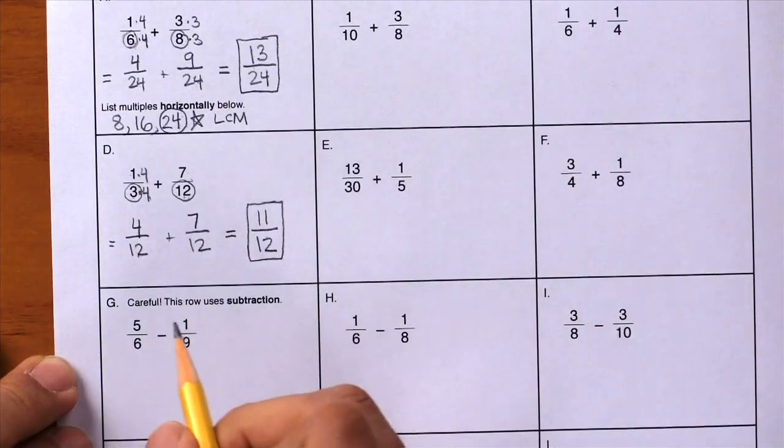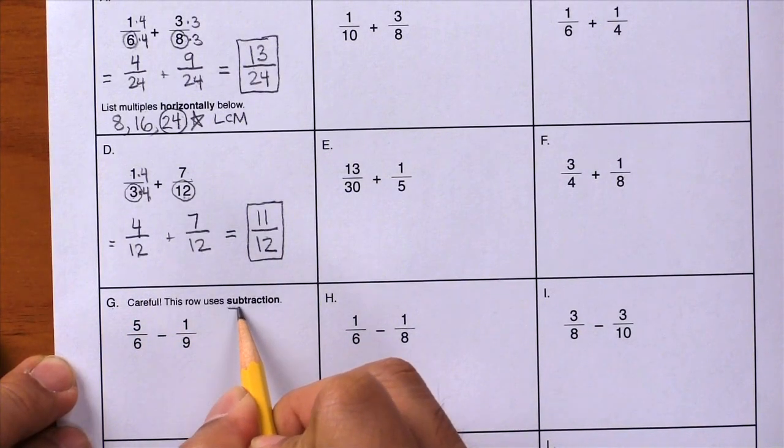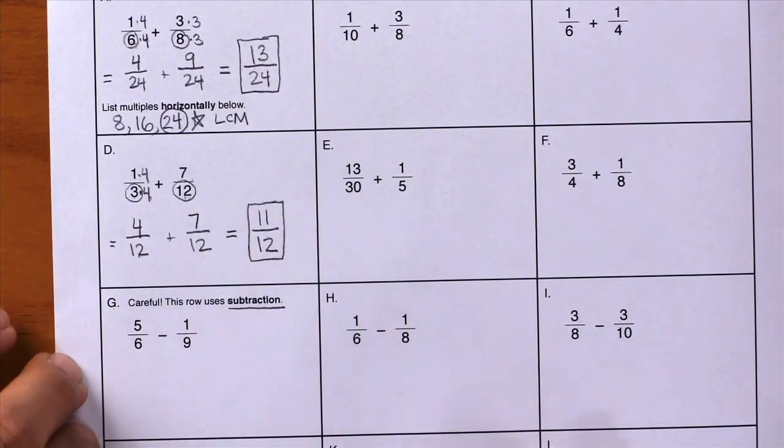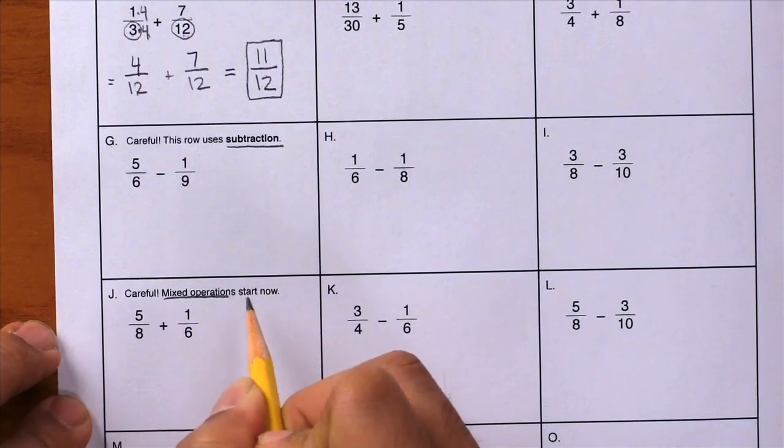Be sure to pay special attention to the little messages on this page. For example, in box G, be careful because this row uses subtraction instead of addition. And in box J, be careful because mixed operations start now.